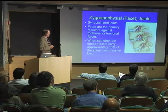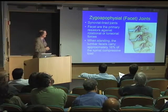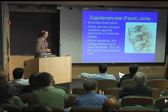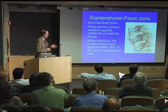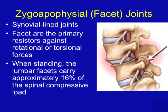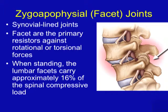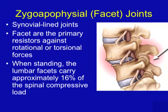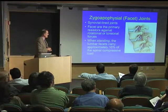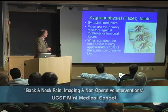The facet joints, also called zygo-apophysial joints, are real joints just like your finger or your knee. They're lined by synovial tissue and they exist in the back of the spinal canal and hook each vertebral body up to the other. There are two on each side, and these can become inflamed with arthritis — if you have rheumatoid arthritis or degenerative osteoarthritis, they can become infected just like any joint can become infected.